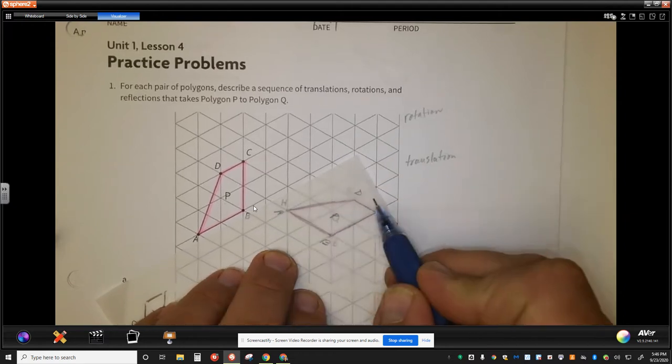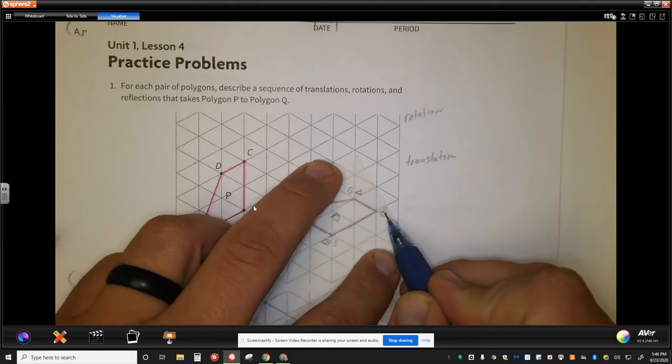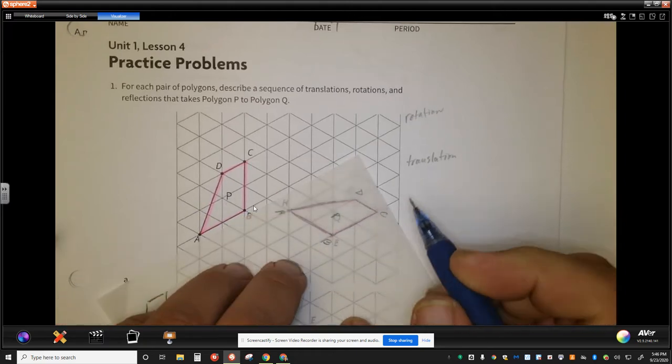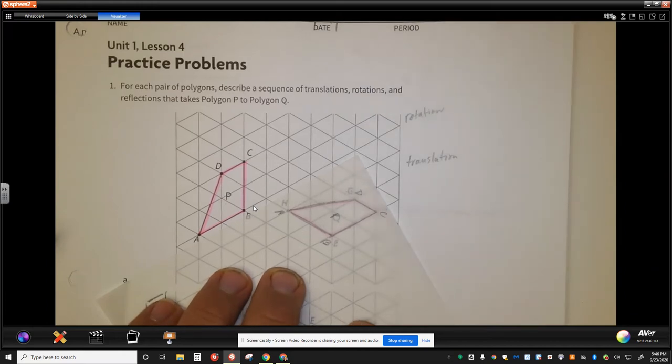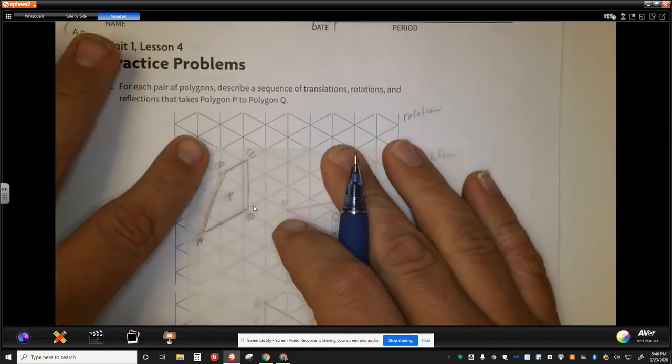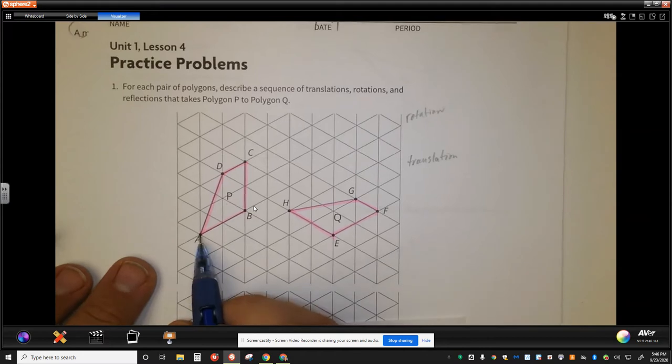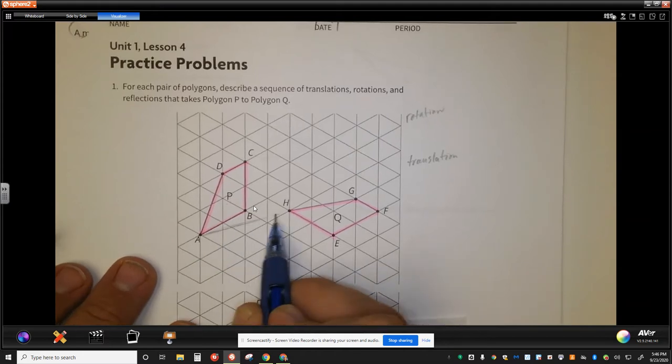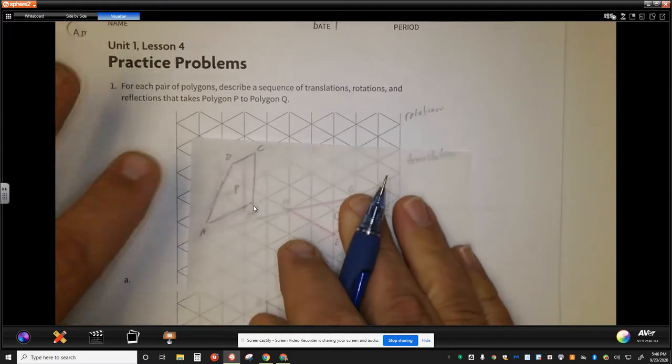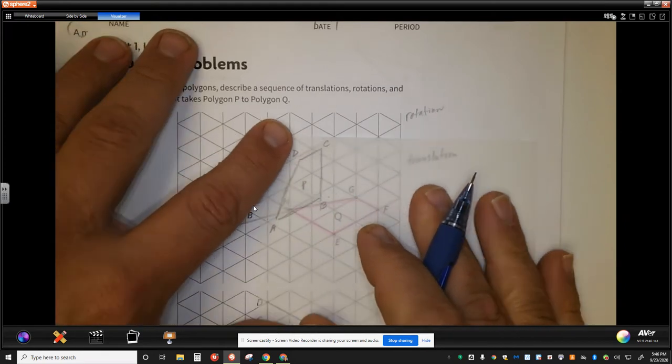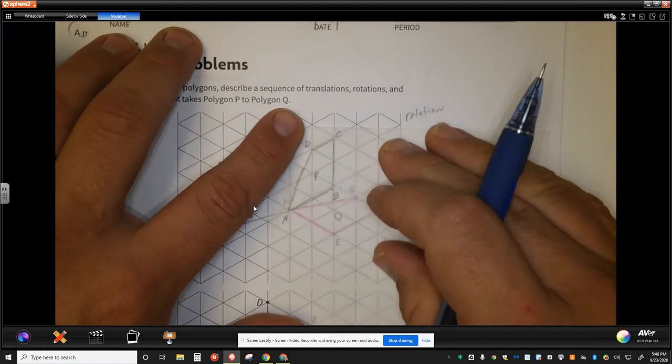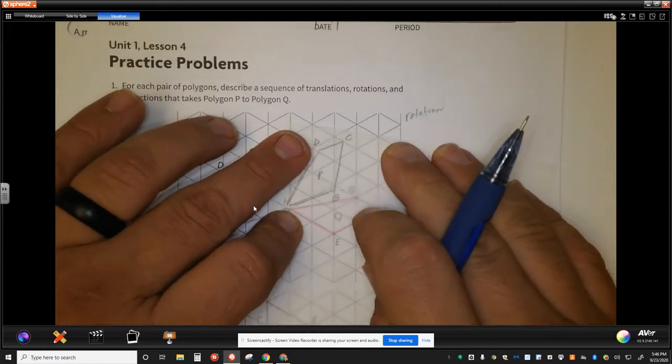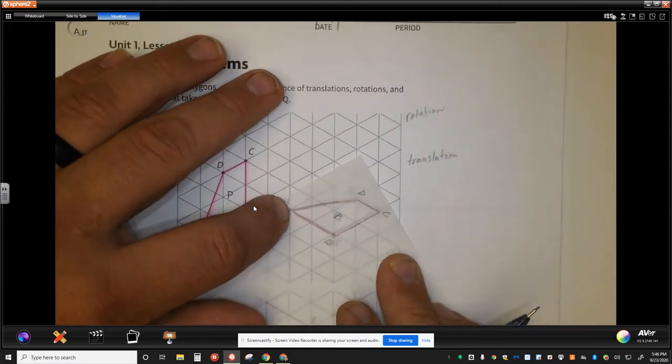Point A and H are corresponding, D and G, F and C, B and E. I can pick any one of those to make my corresponding points for the translation and create any vector. I would like to use A to H just because it's fairly short and kind of close together. And I feel like I can describe a translation of point A to point H and then a rotation of however many degrees that it's going to take to get there.